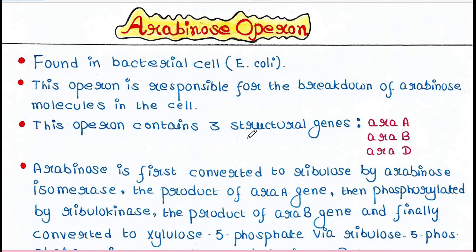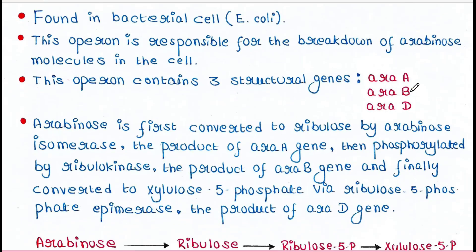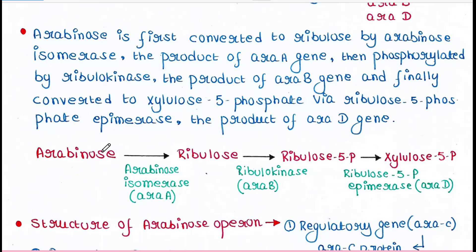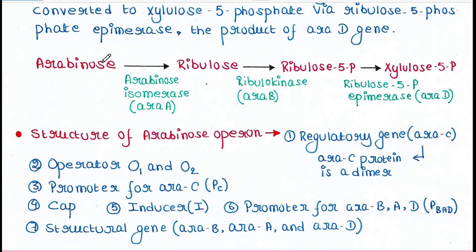This operon contains three structural genes: Ara A, Ara B, and Ara D. Arabinose is first converted to ribulose by arabinose isomerase enzyme, which is the product of the Ara A gene. Then ribulose is phosphorylated to ribulose-5-phosphate, and further processed by ribulose-5-phosphate epimerase, which is the product of the Ara D gene. In this way, the Arabinose molecule gets broken down.